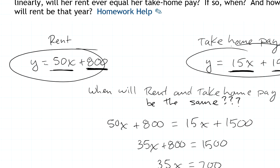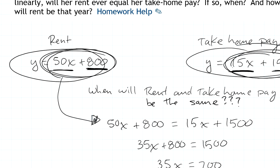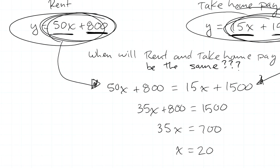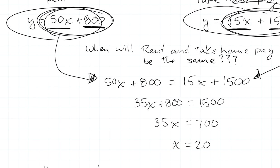So you can see what I've done here is I've taken the expression that represents the rent x years from now and I set that equal to this expression which is the take-home pay x years from now. And when I set them equal it gives me x, the number of years when they'll be the same, is 20 years.